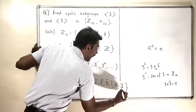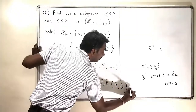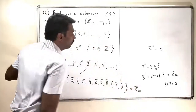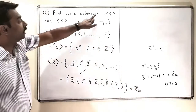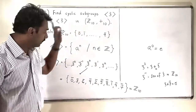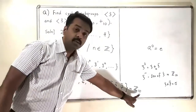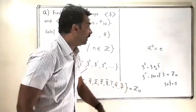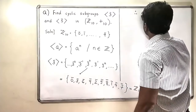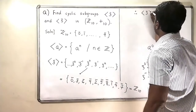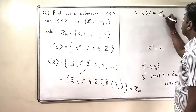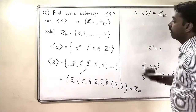This set is actually nothing but Z10 again. So the cyclic subgroup generated by 3̄ is equal to Z10.